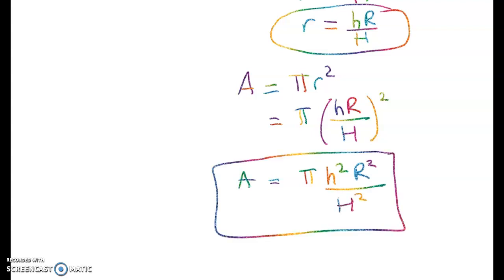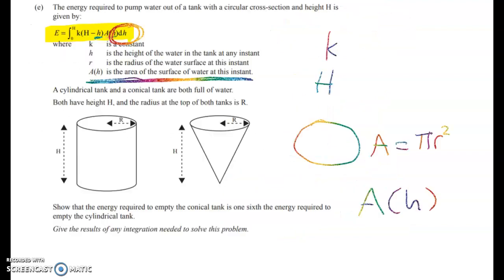So let's just go back to the question and check what we've got to show. Right so we're getting pretty close to having something that we can integrate here. And we have to show that the energy needed to empty the conical tank is one sixth the energy needed to empty the cylindrical tank. So all we have to do now is to do two lots of integration and then hope that one number works out to be one sixth of the other.